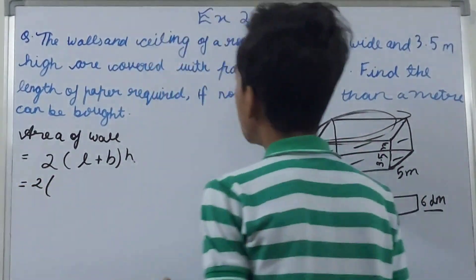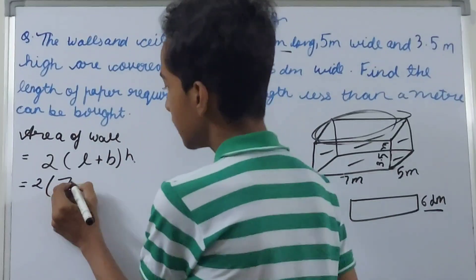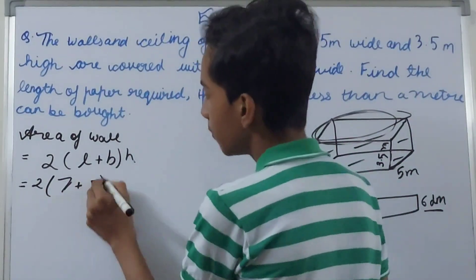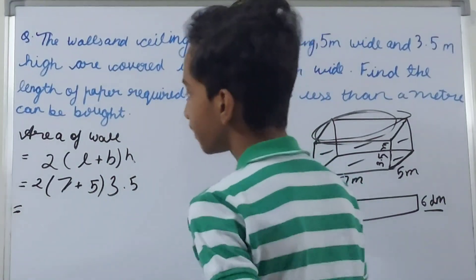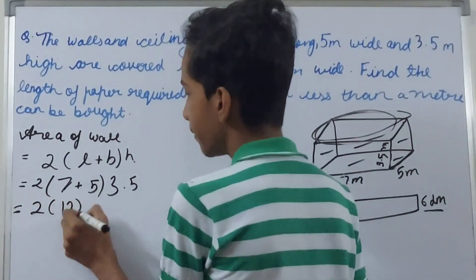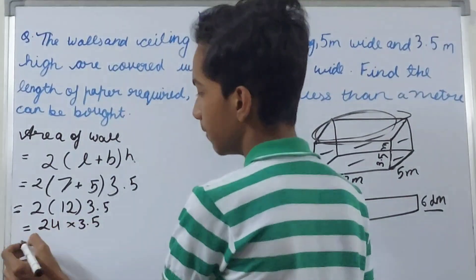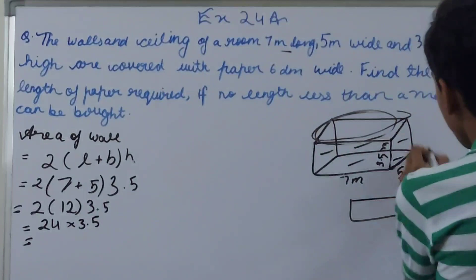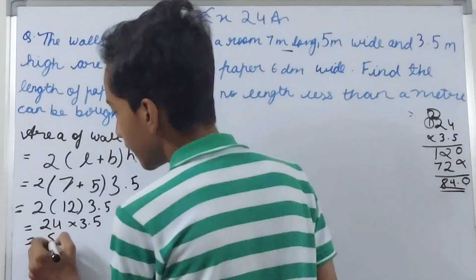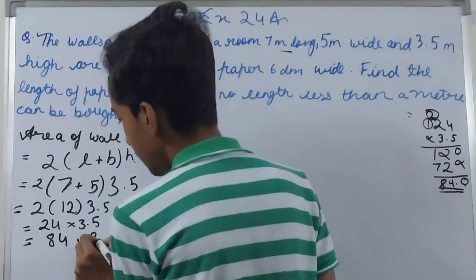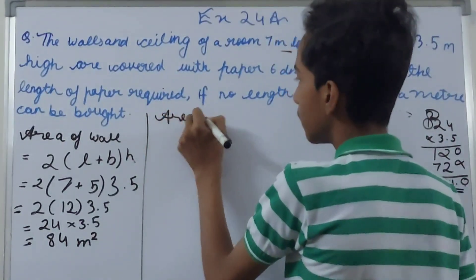Substituting the values: 2 × (7 + 5) × 3.5 = 2 × 12 × 3.5 = 24 × 3.5 = 84 square meters. So the area of the four walls is 84 square meters.